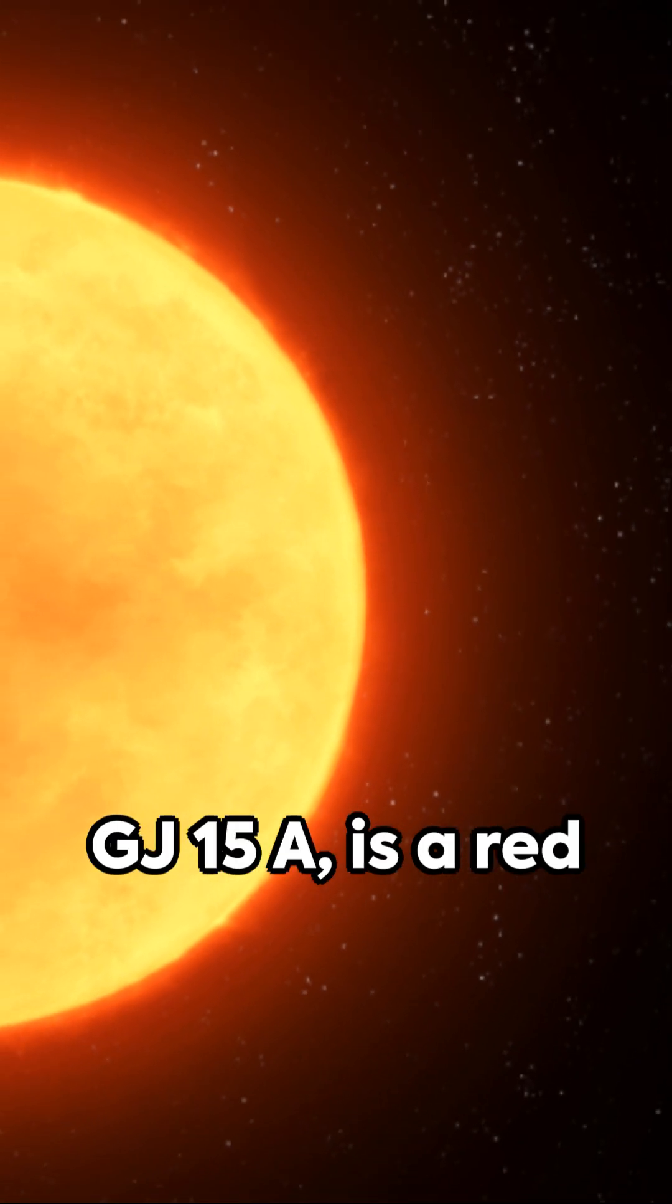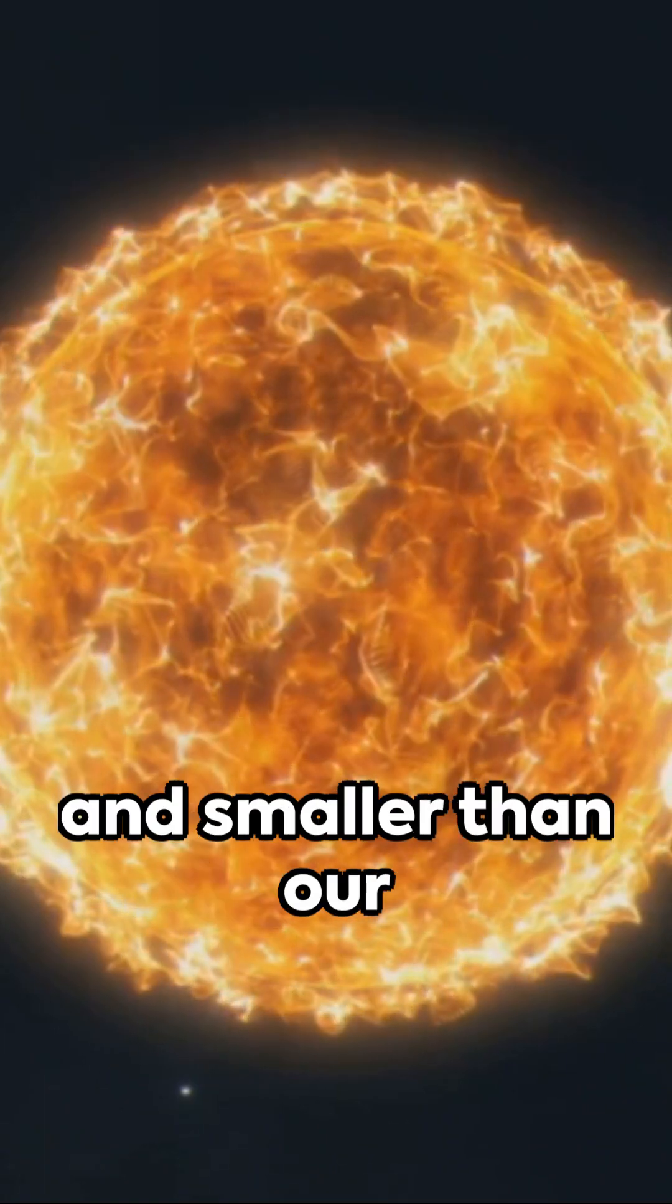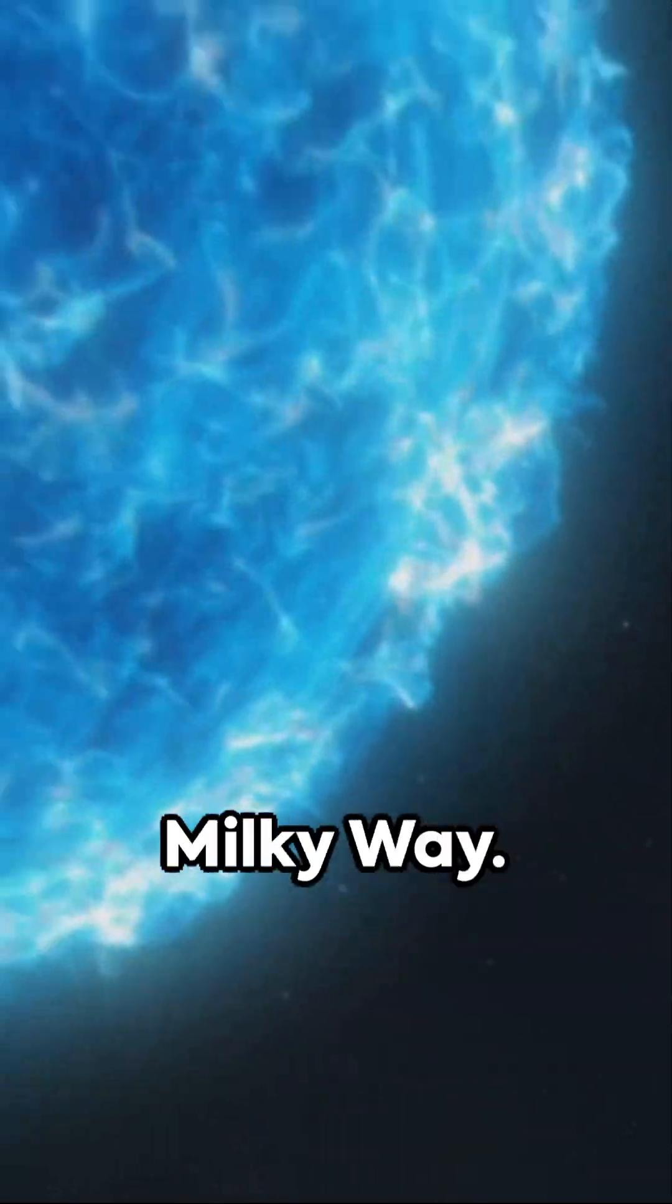The star it orbits, GJ15A, is a red dwarf, less luminous and smaller than our sun, but a common type of star in our Milky Way.